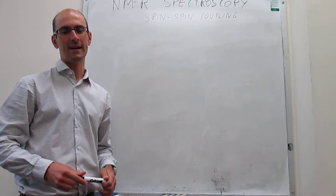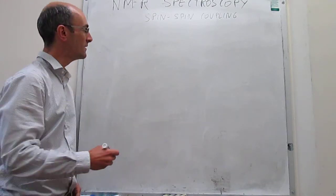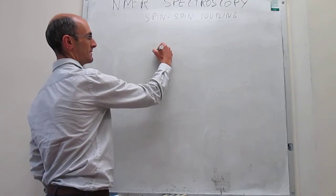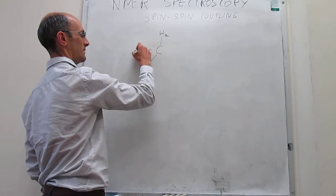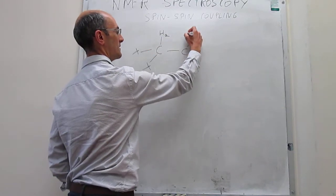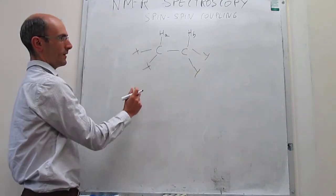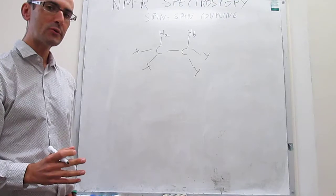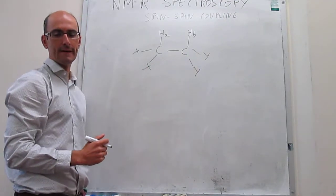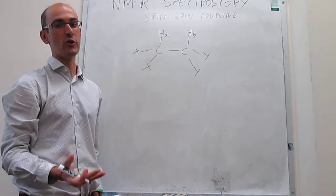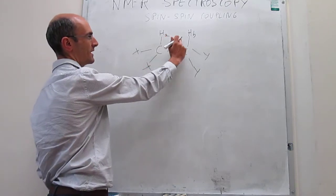In this video, we analyze NMR spectra for spin-spin coupling for a molecule like this: C, H of A, X, X, C, H of B, Y, and Y. We're going to be looking at the proton NMR spectrum. X and Y are different atoms from each other, but they're not NMR active. So the only NMR active nuclei are going to be HA and HB.